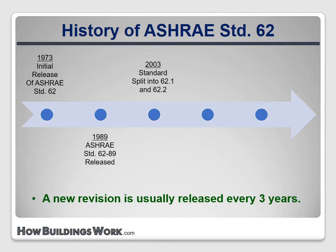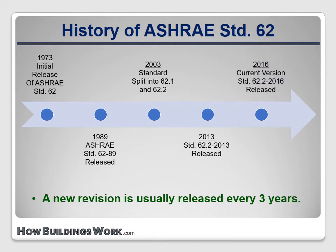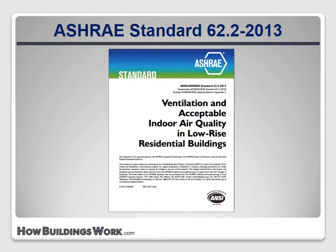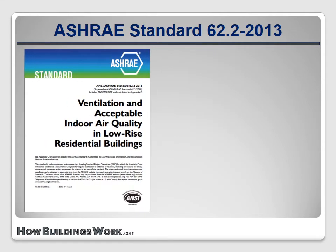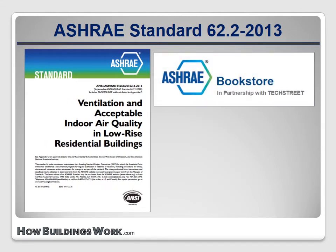The version we'll use for the examples in this course was released in 2013. It's very similar to the current version, which was released in 2016. You can purchase any of the six versions released from 2003 to 2016 from ASHRAE at their website, techstreet.com. As of early 2017, the prices ranged from $37 to $93, depending on the year and the document format — printed, downloaded, or both.